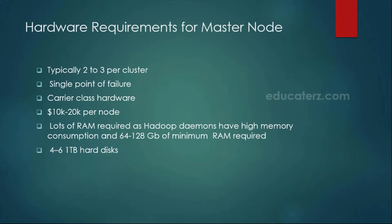When it comes to disk space, as we are not storing any blocks in the name nodes or master machines, you can simply take 4 to 5 terabytes of hard disk. It is useful to store your edit logs information and also your log files. Such things can use 4 to 6 terabytes of data space.